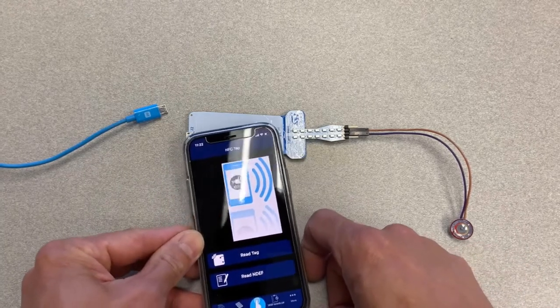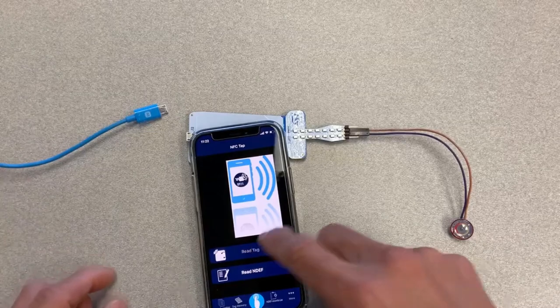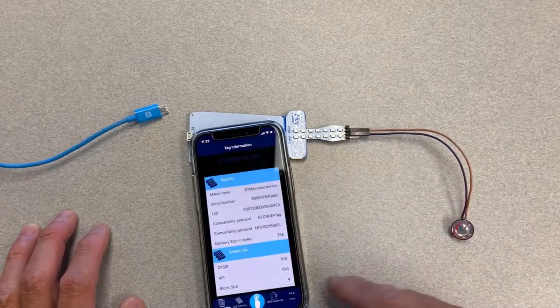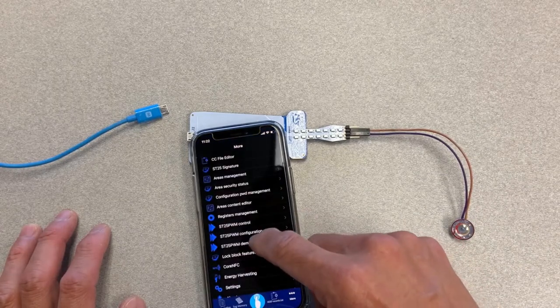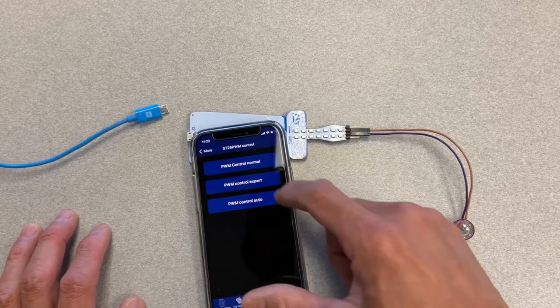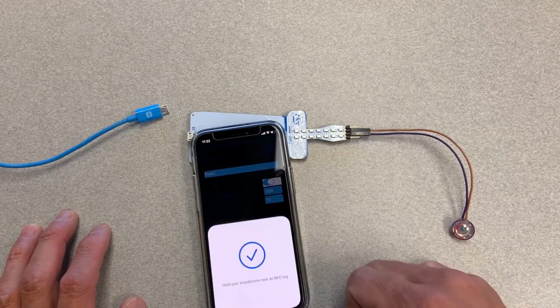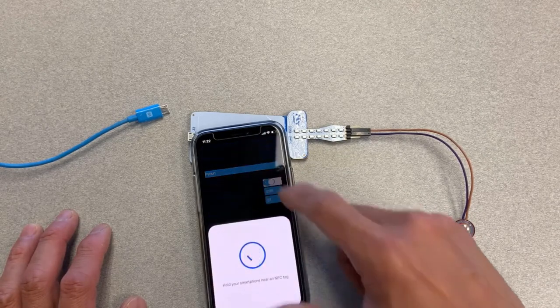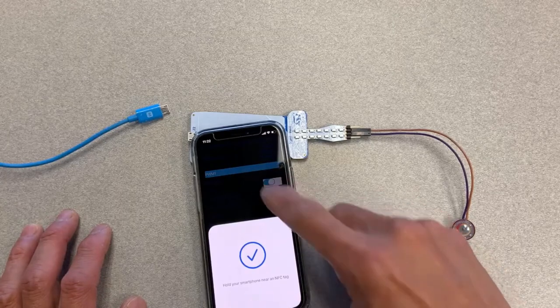So without the board powered up, I will go to PWM control. I will go to PWM control export. Now I'm going to turn both of the outputs off.